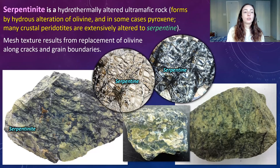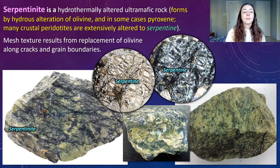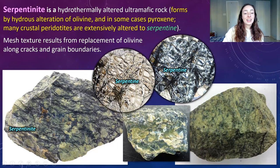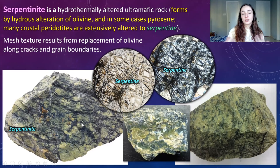Now moving on to serpentinite. Serpentinite is a hydrothermally altered ultramafic metamorphic rock that forms by hydrous alteration of olivine. Many crustal and mantle rocks are extensively altered to the mineral serpentine. In thin section it shows a meshy texture that results from the replacement of olivine along cracks and grain boundaries, creating a very snakeskin-like texture in both thin section and hand sample. It's very recognizable and distinct.